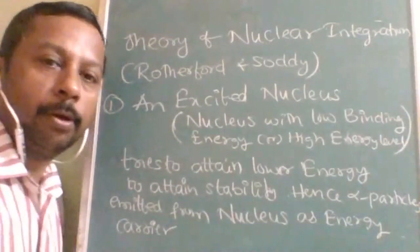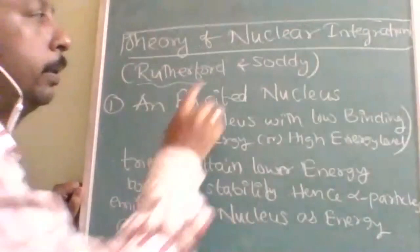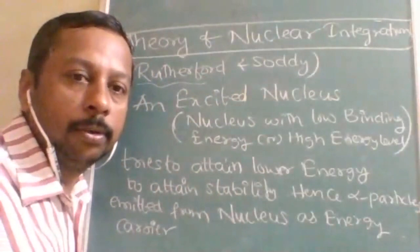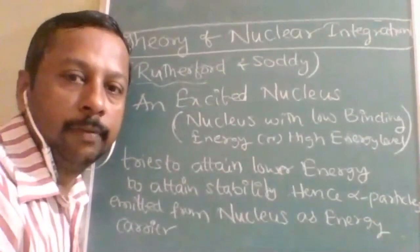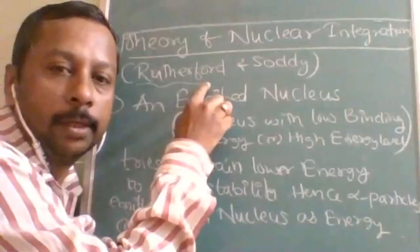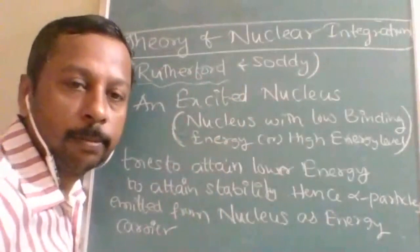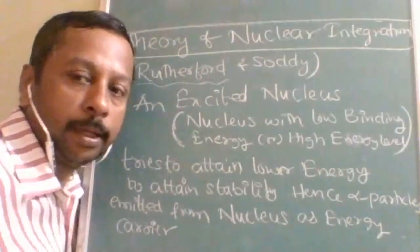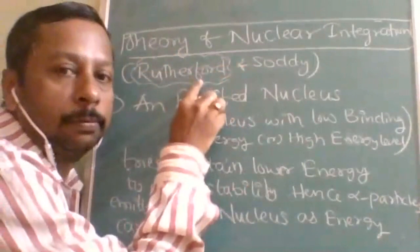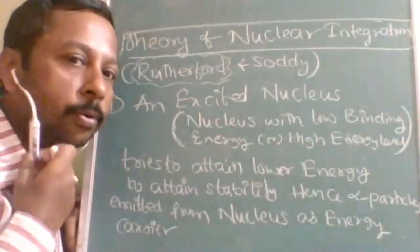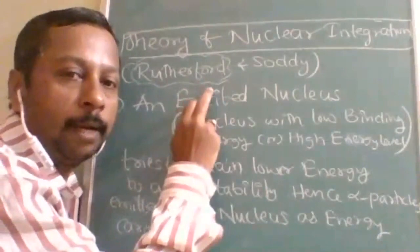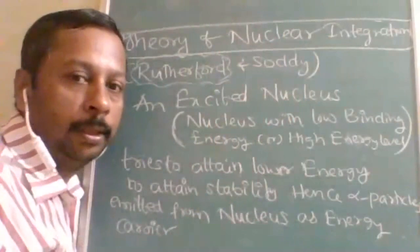Now we are going to start with the theory of nuclear disintegration, given by Rutherford and Soddy. Already in atomic structure, the model was successfully given by Rutherford only. He was able to explain the nucleus but could not explain the extra-nuclear part. That is why his points are more accurate and applicable for the nucleus. Apart from the atomic model, he also gave the theory of nuclear disintegration.